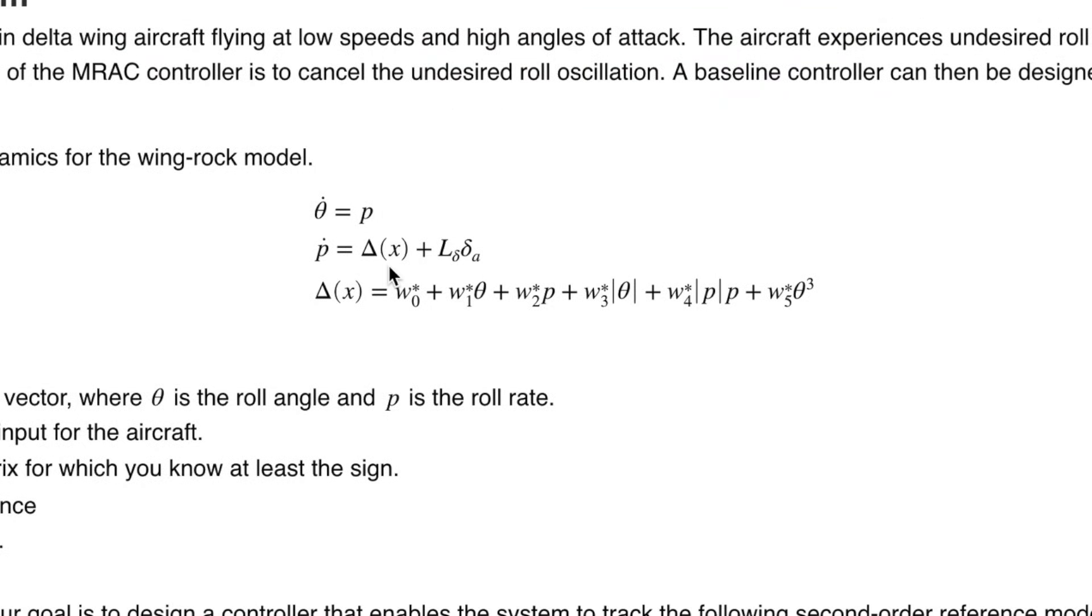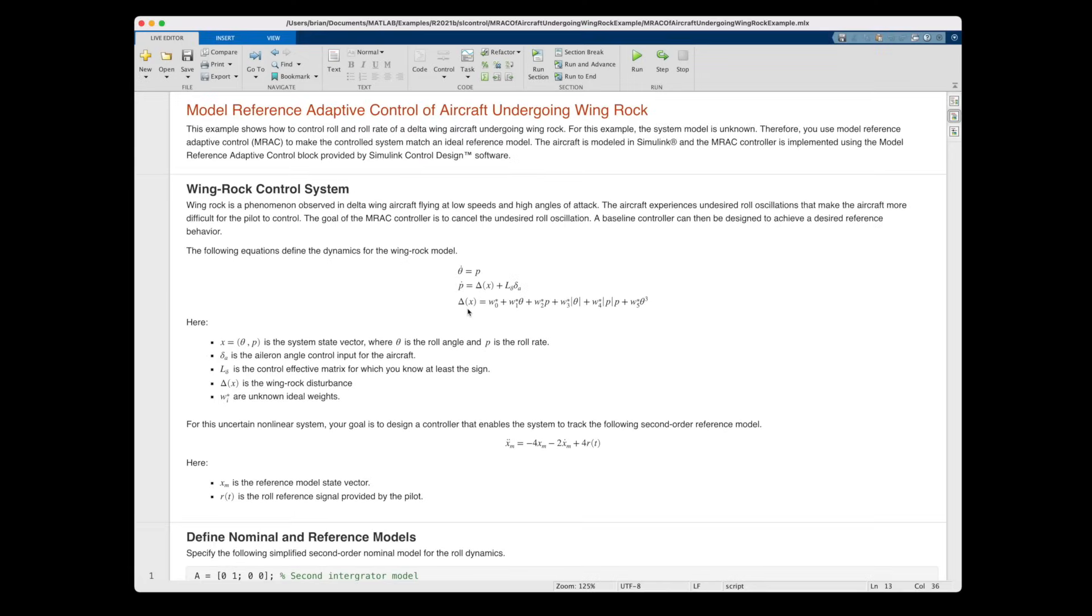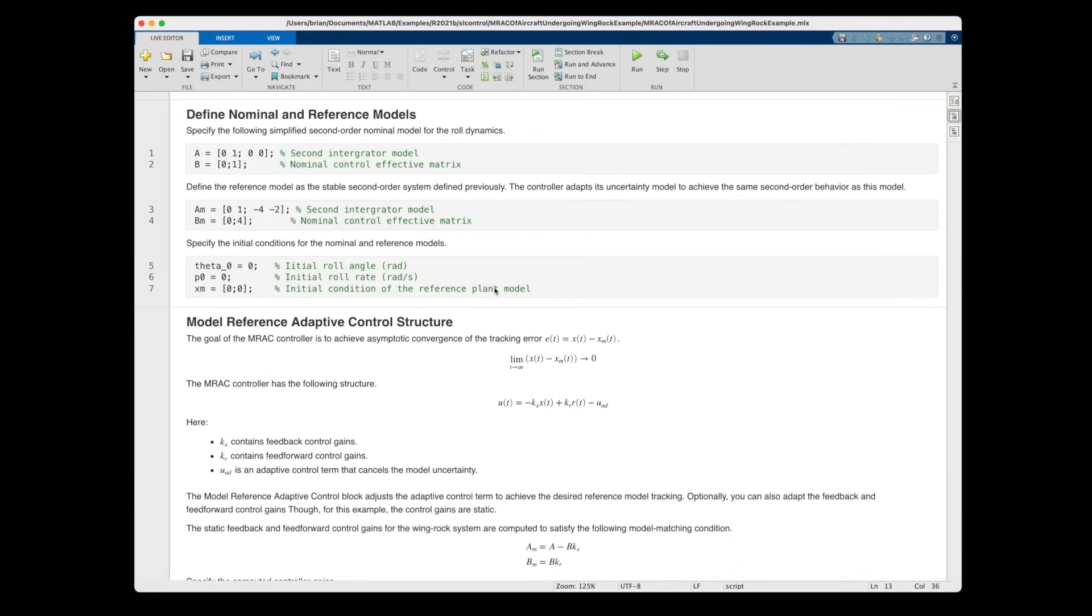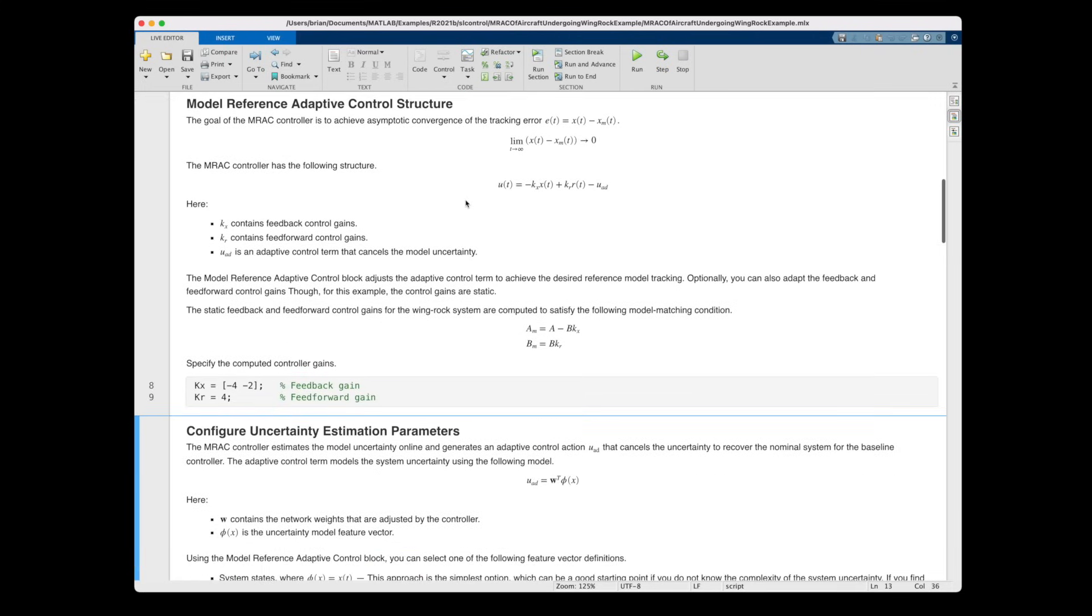OK, here is the real system dynamics, and it's saying that the roll rate is the derivative of roll angle, and the angular acceleration is affected by the angle of the ailerons, plus the unknown roll dynamics delta x caused by the stalling wings. This is the f of x that we won't have modeled, but are hoping that the MRAC controller can estimate and cancel out. And down here, we define the nominal model of the aircraft and the reference model that we want the closed loop system to behave like. And since we have a nominal model, we can use the model matching conditions to specify a kx and kr.